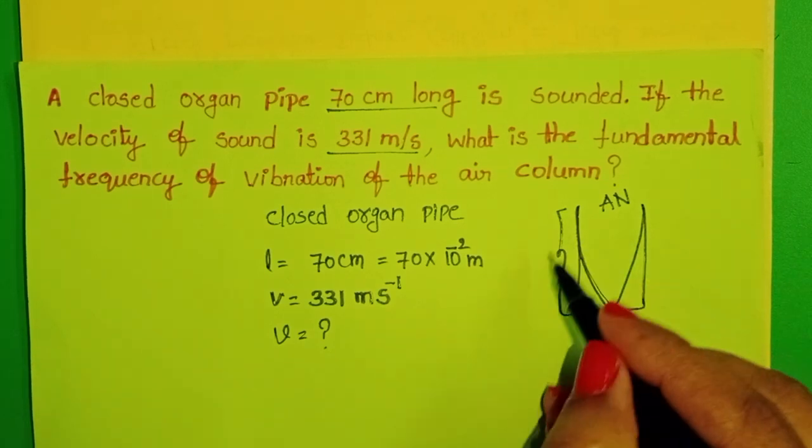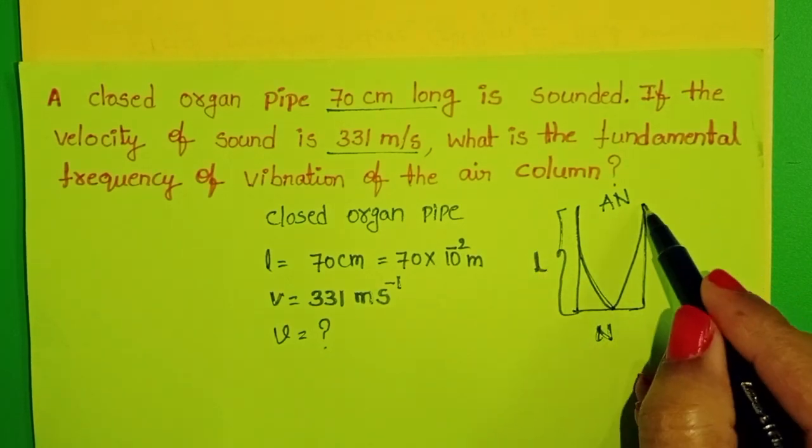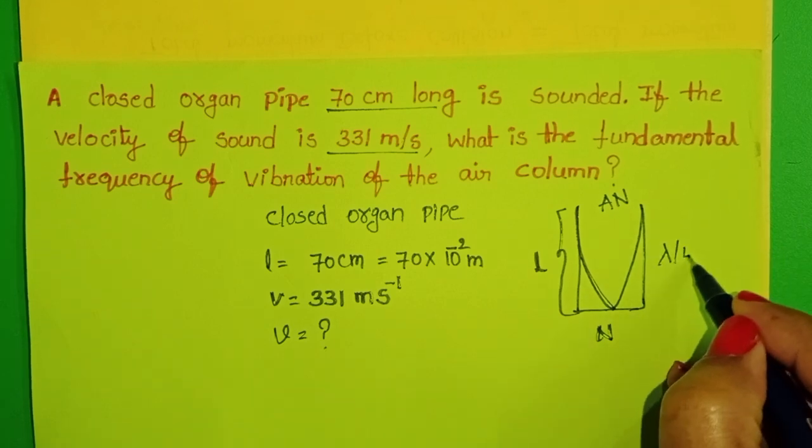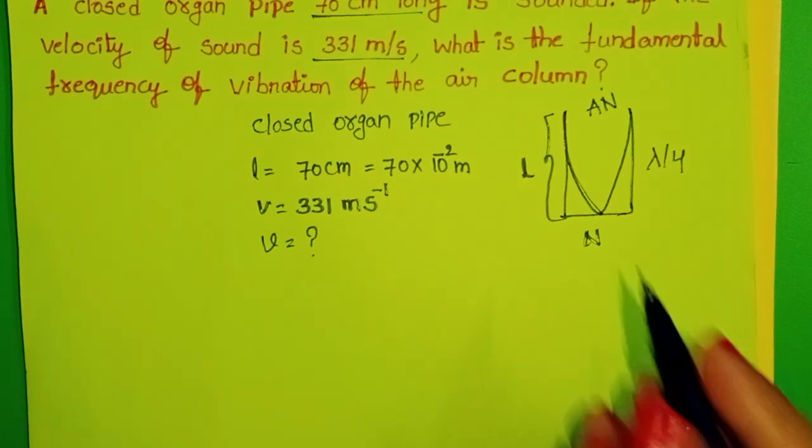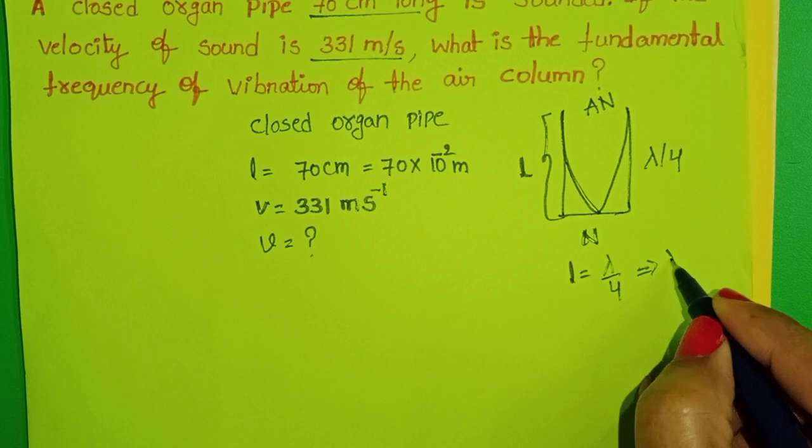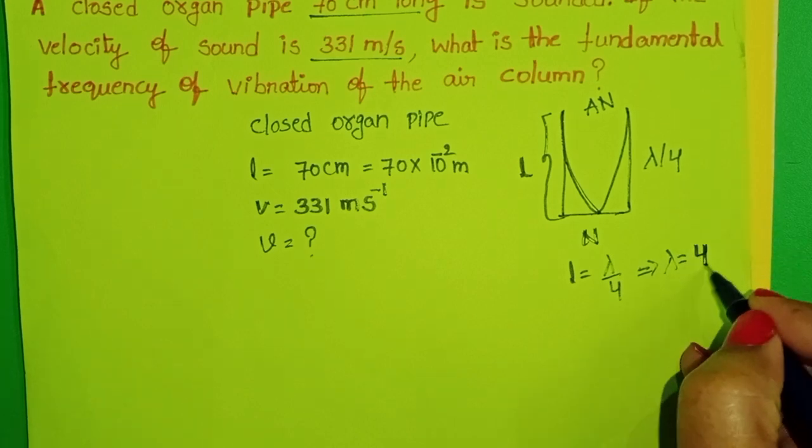Let length of the organ pipe be L. The distance between anti-node and node is lambda by 4. L equals lambda by 4. From this, lambda equals 4L.